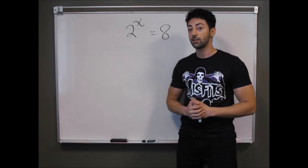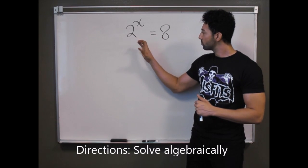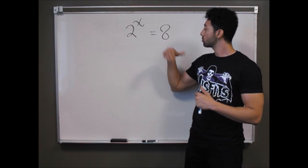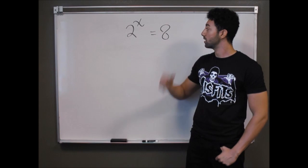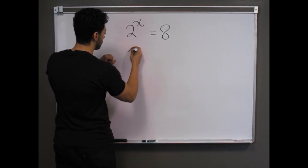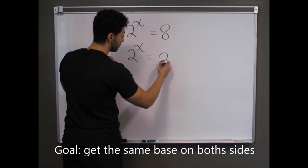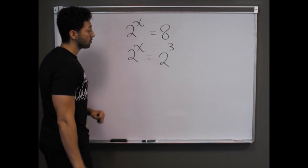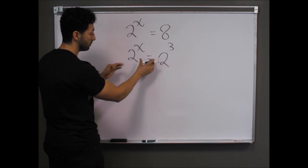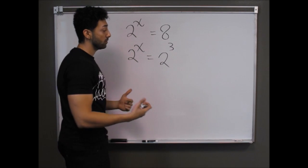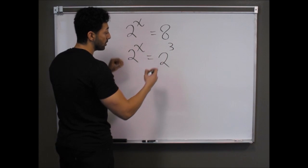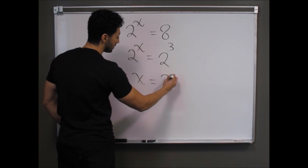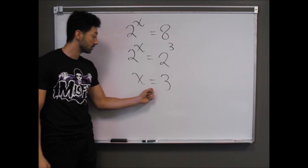Now let's focus on getting both sides of the equation to the same base. I can't do anything with the left side, so I'll rewrite 8 in a way that has a base of 2. We have 2 to the x on the left, and I can rewrite 8 as 2 to the 3rd power since 2 cubed equals 8. Once we have the same base, the equal sign tells us the exponents must be equal, so we pull out the exponents: x equals 3.